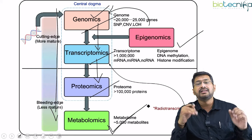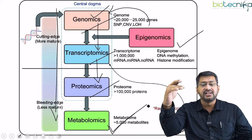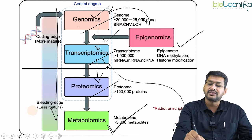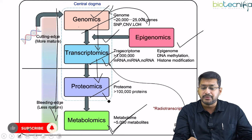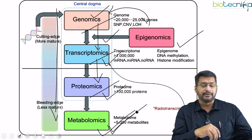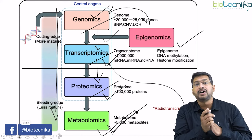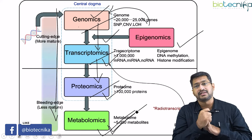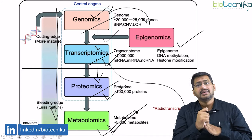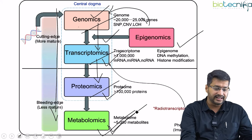So what is the new modern central dogma? It starts with epigenetics, from epigenetics it goes into genomics, from genomics to transcriptomics, from transcriptomics to proteomics, and then on to metabolomics. This is the major difference between the classical central dogma of molecular biology and the modern central dogma of molecular biology.